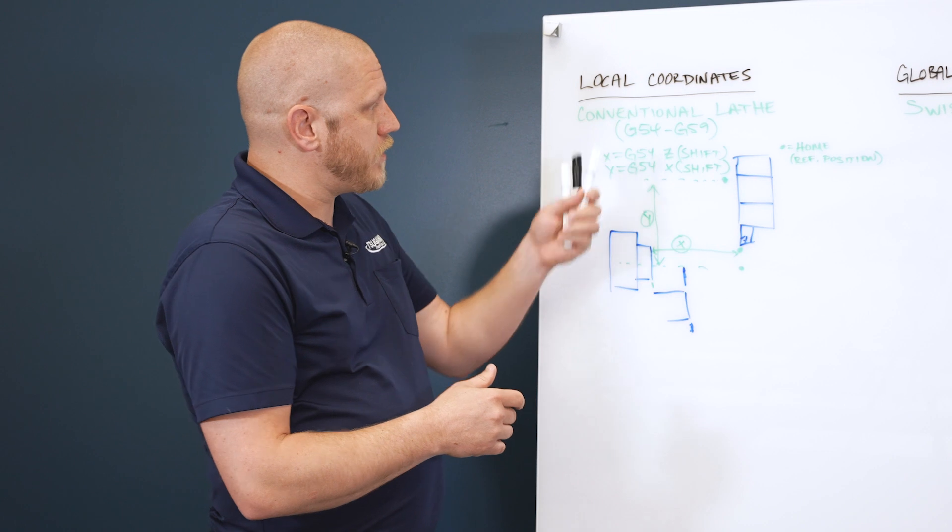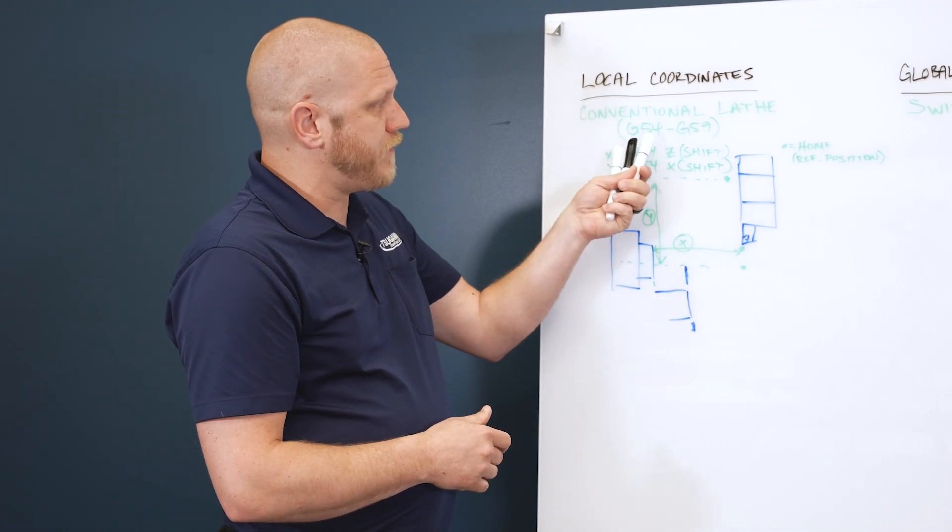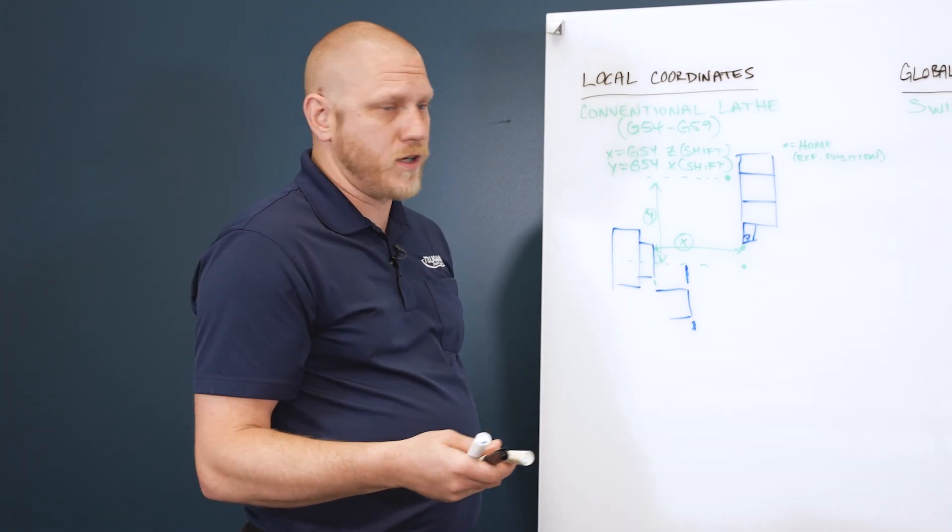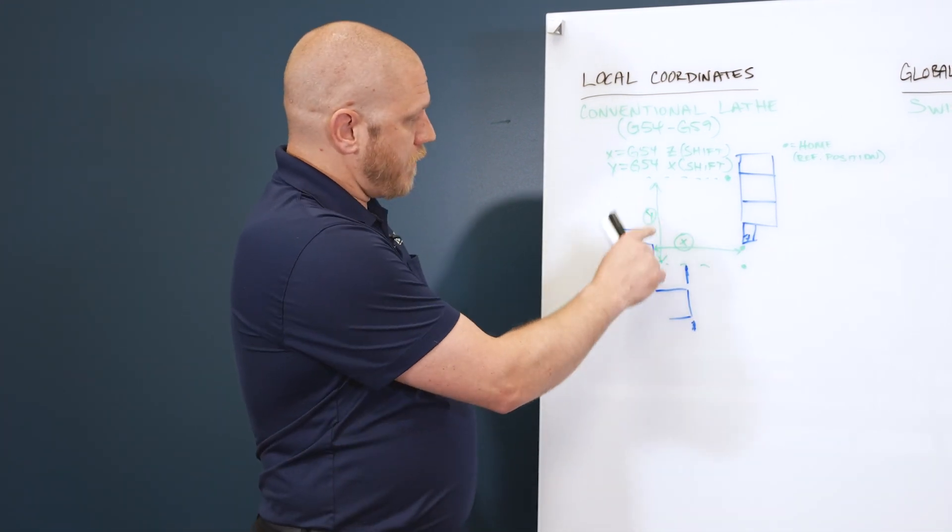On a conventional lathe, local coordinates are G54 to G59 work shifts. So you could have up to six different work shifts.